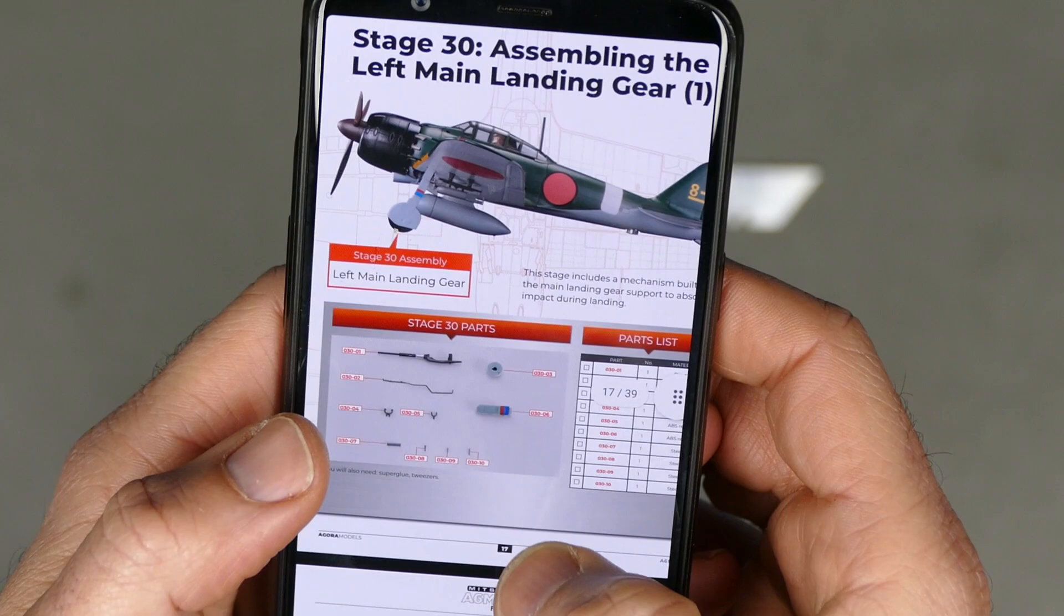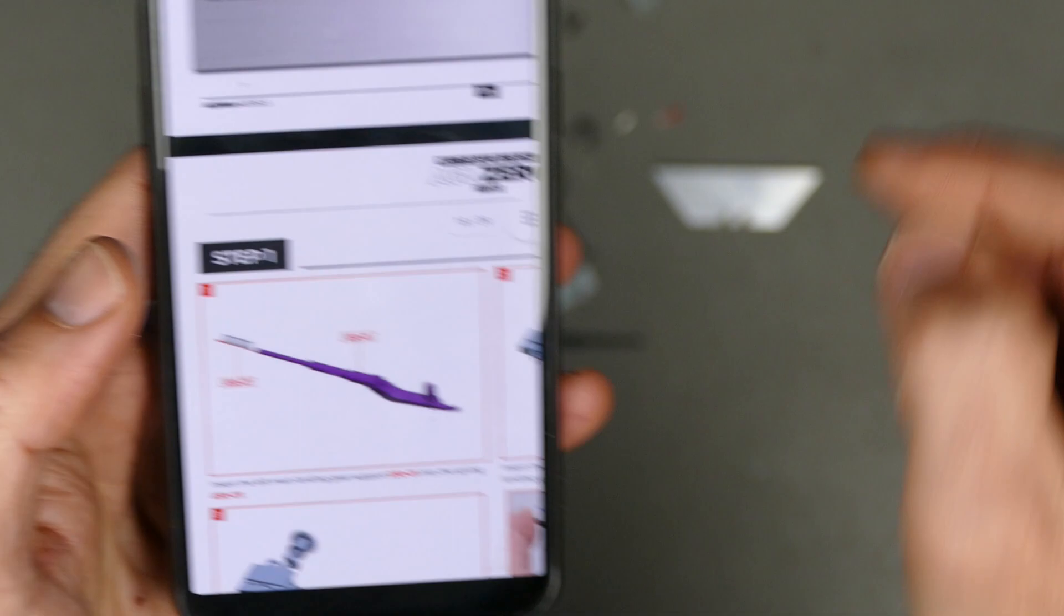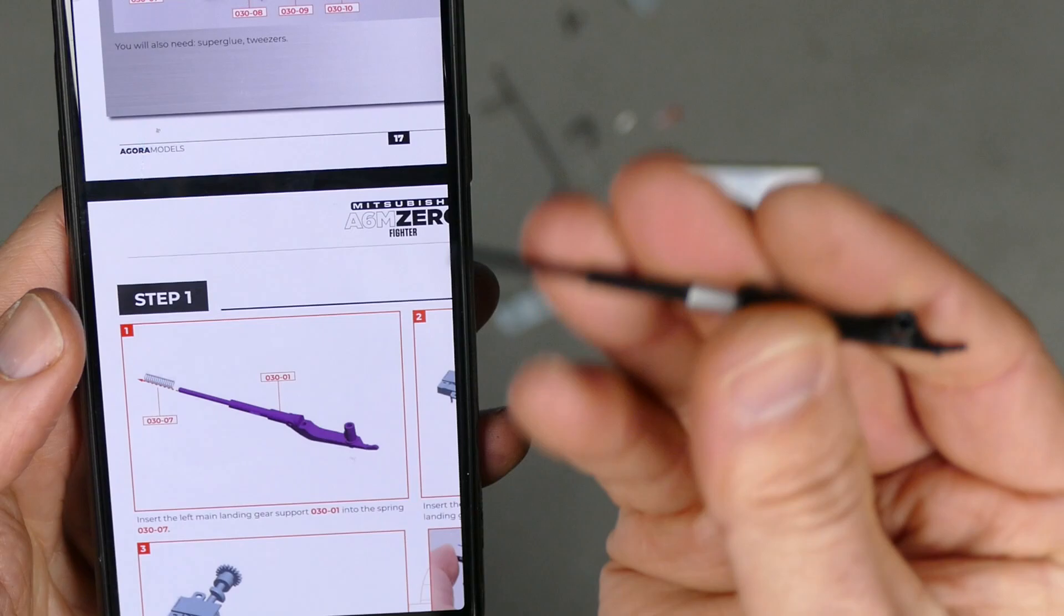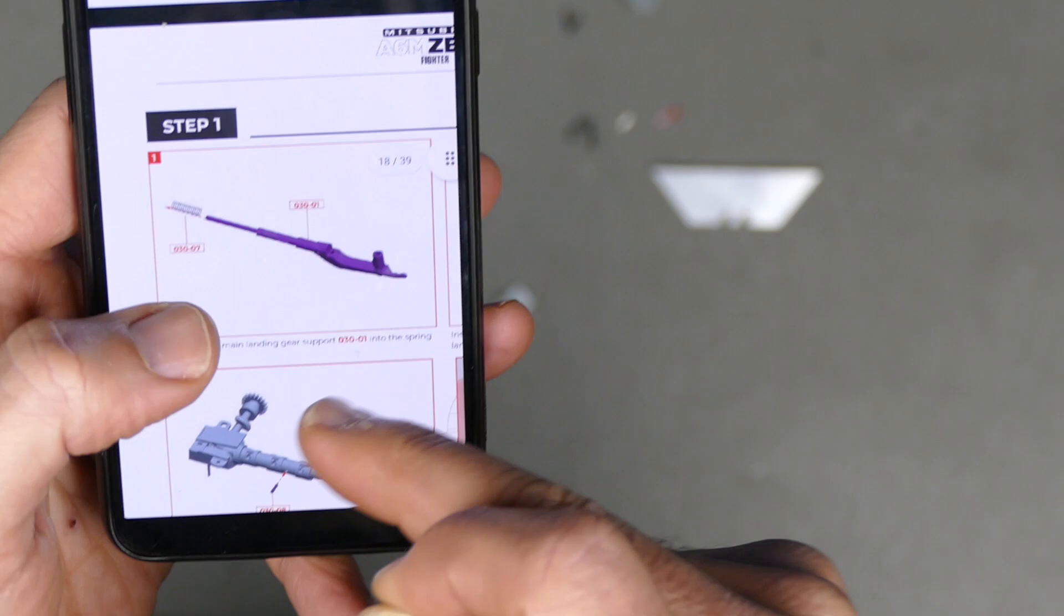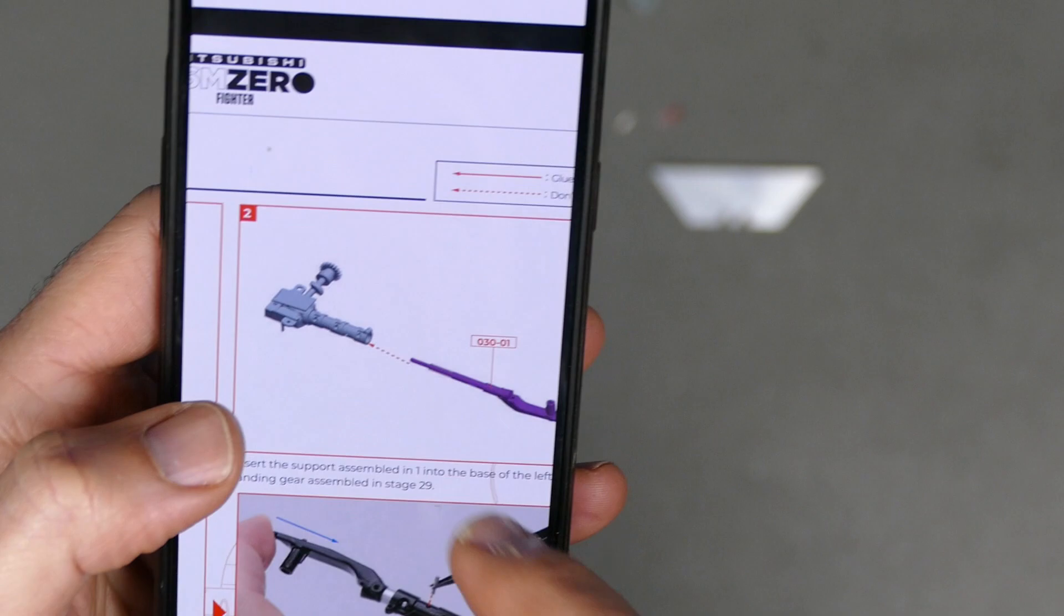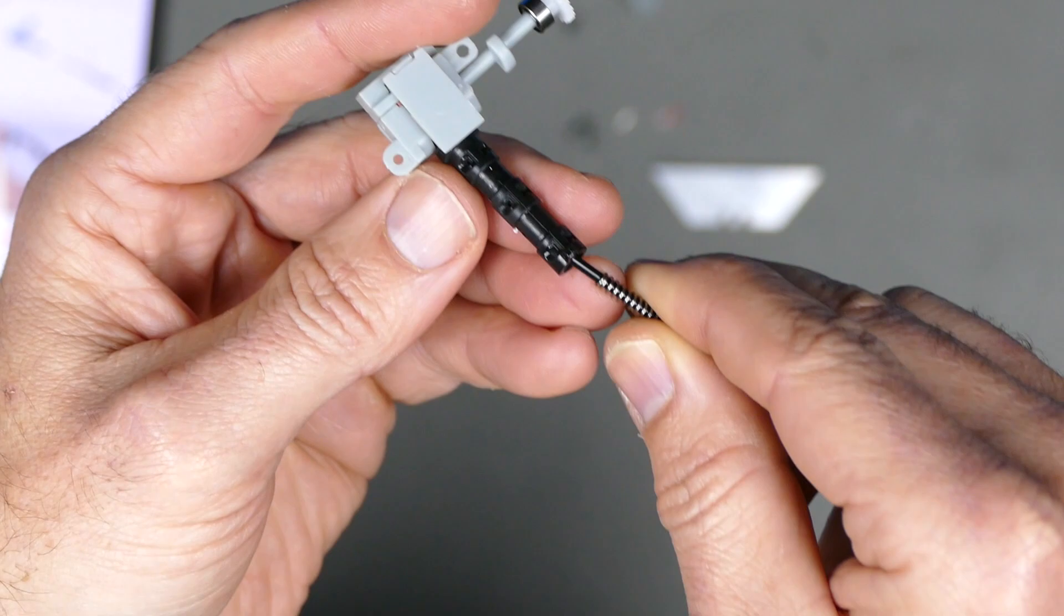Stage 30. Still on the landing gear. Now this is left main landing gear. And this stage includes a mechanism built into the main landing gear support to absorb the impact during landing. That's great. So the main landing gear support is this guy here. And that's made out of metal. Nice and strong. And you've got a lot of components here. It's got a little spring. Be careful we don't lose this guy. A little spring that I need to attach. So you just slide the spring onto that. And then we get the main mechanism that we just assembled from before. And slide it on there as well. Yes like that.